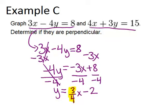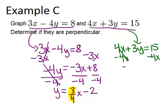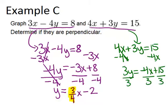So let's see what the slope of the second line is. For this second equation, it starts out as four x plus three y equals fifteen. I'm going to minus four x from both sides, and I end up with three y equals negative four x plus fifteen. Now I'm going to divide every part by three, and I get y equals negative four-thirds x plus five. So the important part, again, is the slope, and the slope of this line is negative four-thirds.